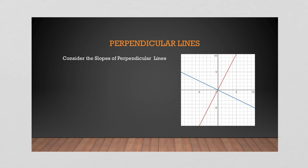Now, what about perpendicular lines? Perpendicular lines — like the red and blue lines shown — create a 90-degree angle at their intersection. That is what makes two lines perpendicular; otherwise they just cross, but they're not perpendicular unless they form that 90-degree angle.